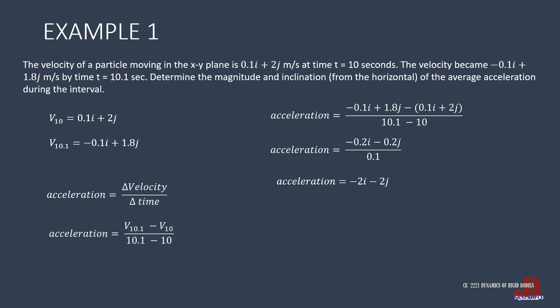With i and j terms already simplified, we use the Pythagorean concept to solve for the magnitude — that is taking the root of the coefficient of i squared plus the square of j, resulting in 2 root of 2, which is 2.83 meters per second squared. The inclination is solved as the inverse tangent of the coefficient of j over i, that is the inverse tangent of negative 2 over negative 2, and that shows 45 degrees inclination.